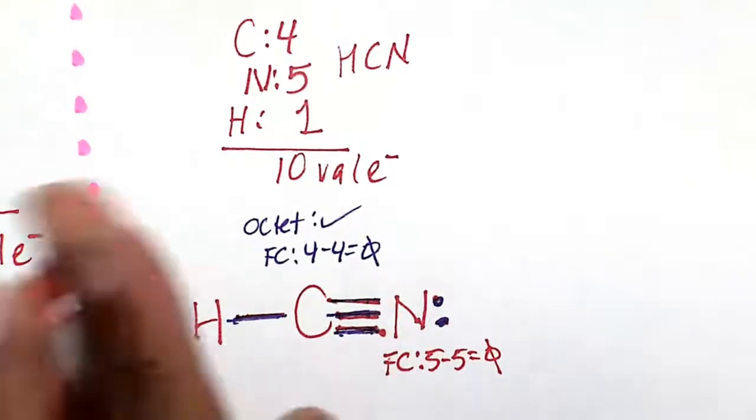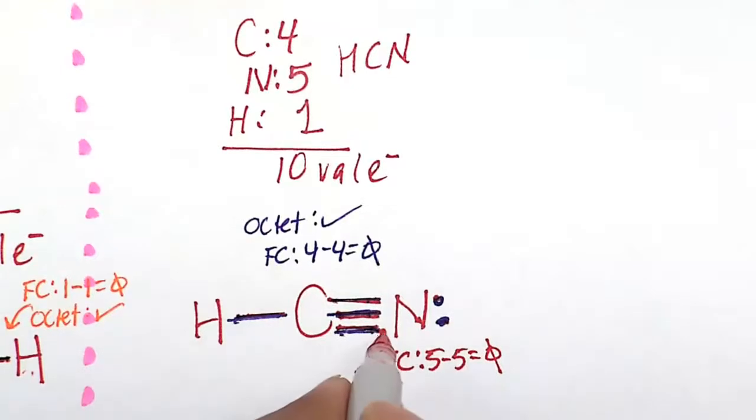The octet rule for this nitrogen here, we count everything individually. This is shared in this triple bond. So it's 1, 2, 3, 4, 5, 6, 7, 8. Even better, the octet rule is satisfied for the nitrogen.